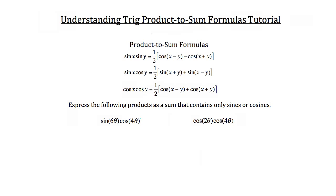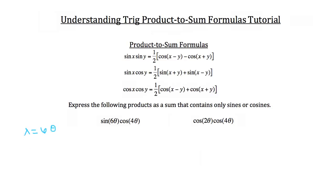I'd like you to express the following products as a sum that contains only sines or cosines. Take a look at this first one — we have a product of sine times cosine. Whenever we multiply a sine times a cosine, we're going to use this formula right here. You'll notice that x corresponds to six theta, and y corresponds to four theta. So for this problem, x is equal to six theta and y is equal to four theta.